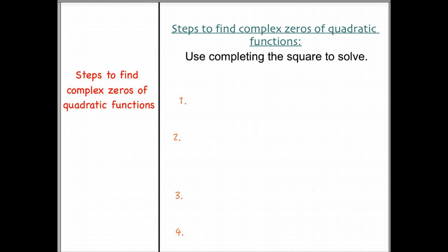we are going to use completing the square to solve. We're going to look back at our steps we took to complete the square. What I want you to remember is that the leading coefficient — so a — must be equal to a positive 1.